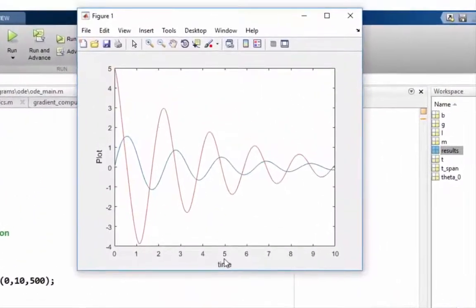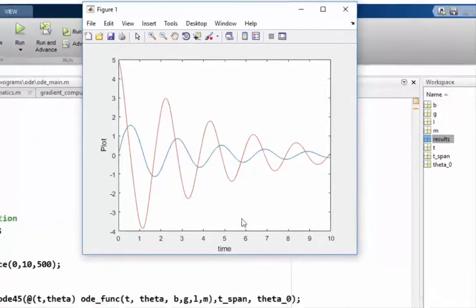So if you run it you can see that you have two curves. The first curve represents your displacement and your second curve represents your velocity. The way I am able to tell this is you can see that displacement starts at 0 and velocity starts at 5 meter per second.